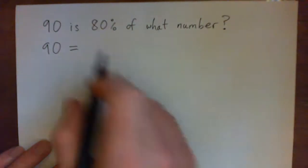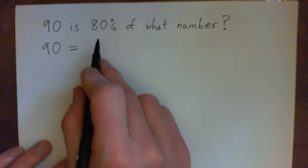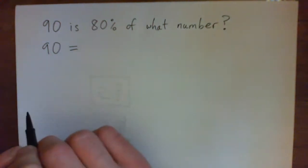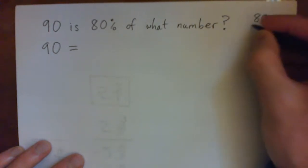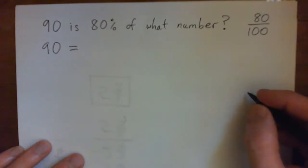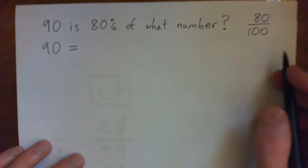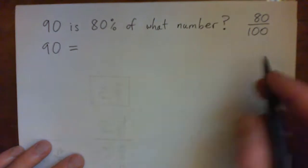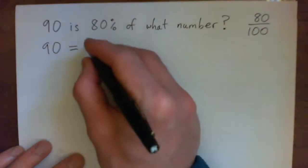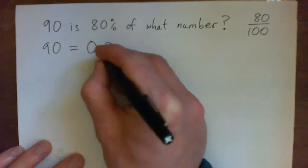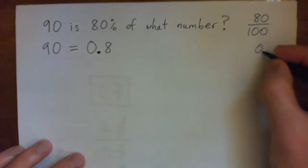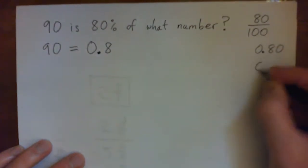Now, I want you to turn 80% into a decimal. So, remember that 80% is 80 per 100, 80 hundredths. So, 80 hundredths is 0.80 or just 0.8. Same thing, 0.80, 0.8.